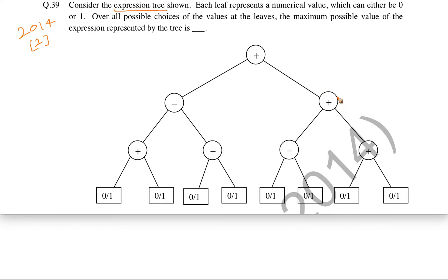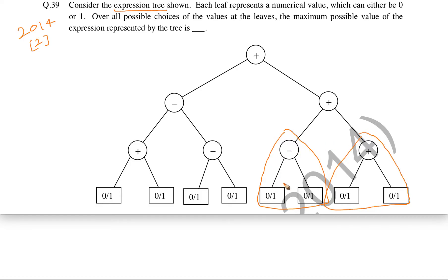Now here also we are seeing that this is a plus operator. So we have to maximize this subtree and this subtree as well. If we maximize both of them, then their summation is going to be the maximum of this node, because the operator here is plus — that is why we are going to maximize both children.